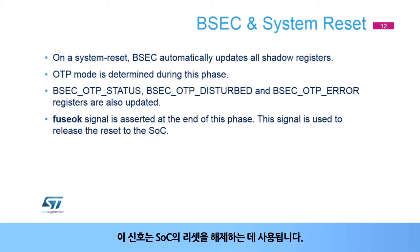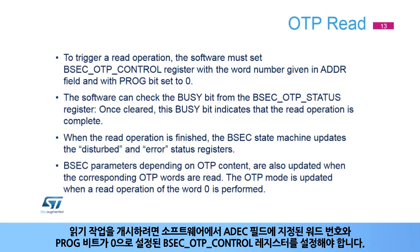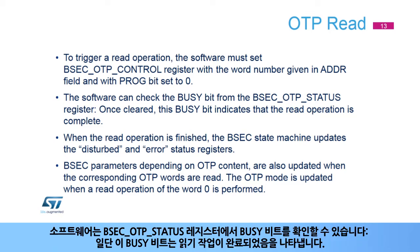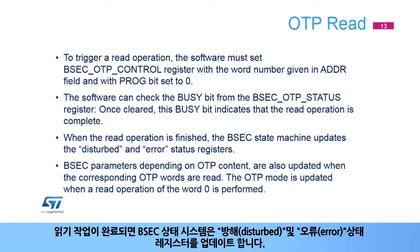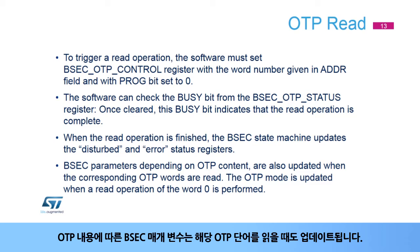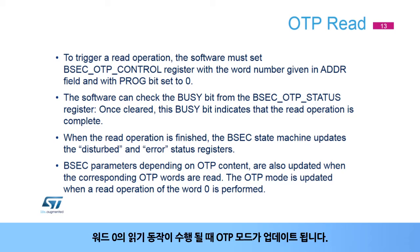To trigger a read operation, the software must set the BSEC OTP control register with the word number given in the ADDR field and with the prog bit set to 0. The software can check the busy bit from the BSEC OTP status register; once cleared, this busy bit indicates that the read operation is complete. When finished, the BSEC state machine updates the disturbed and error status registers. BSEC parameters depending on OTP content are also updated when the corresponding OTP words are read. The OTP mode is updated when a read of word 0 is performed.